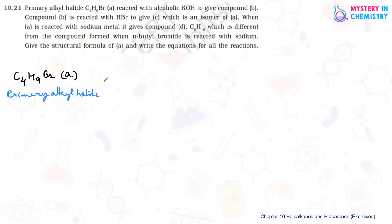When treated with alcoholic KOH, the product formed is B. We don't know about the structure of B. Compound B is reacted with HBr and compound C is formed, which is an isomer of A. This C compound which is formed is actually isomer of A.